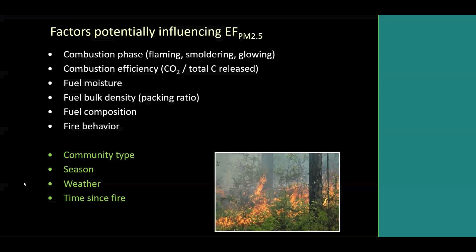Some different factors that could potentially influence emission factors — which was the impetus for this study — include the combustion phase, whether flaming, smoldering, or glowing combustion, which is related to combustion efficiency. Fuel moisture has been found to increase emission factors. Packing ratio affects oxygen availability, which influences efficiency. Fuel composition — what kind of plants and chemistry — and fire behavior also play roles. These feed into more general environmental variables such as community type, season of burn, weather during the burn, and time since fire, to name just a few.